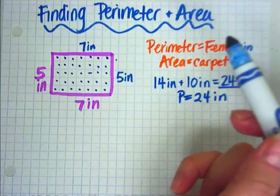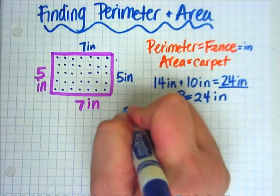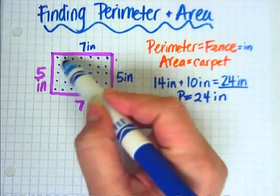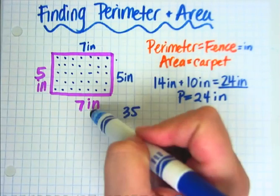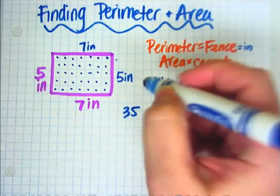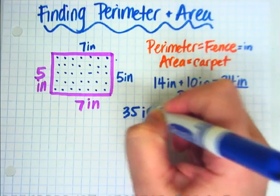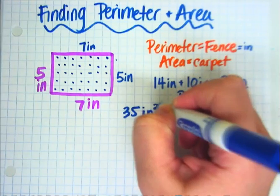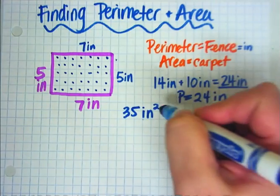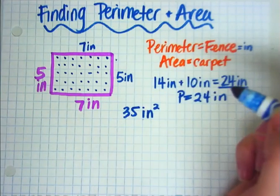So I counted all of those, and I got 35. So I'm going to write that right there. Now, 35 squares in this case. Square what? Hmm. Each square is an inch. So the unit for that would be square inches, and we write that with an inch abbreviation and a little 2 that's kind of on the shoulder of the inch, which is the square sign.